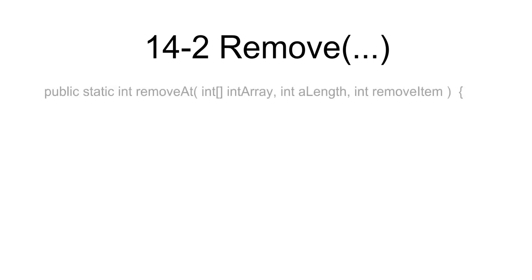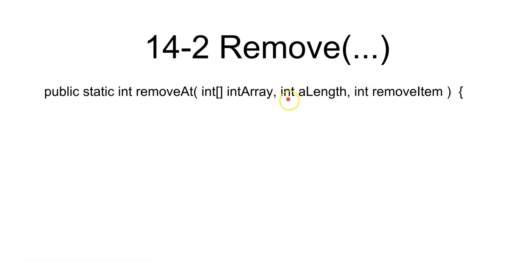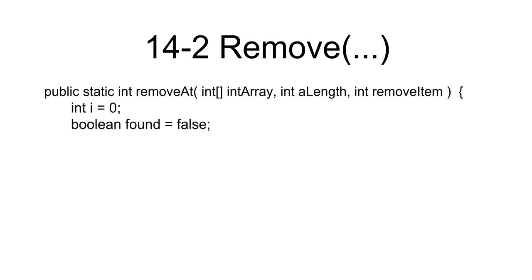The author's remove function uses an array with a variable keeping track of how many elements are actually being used. There's also the item to remove, so we have three parameters instead of just two - the array, the length, and what to remove. We initialize a variable keeping track of whether we found something or not.